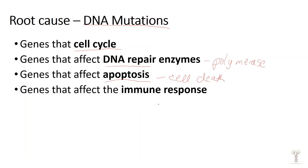And lastly, the immune response. We have immune cells called natural killer cells that will kill cancer cells if they do develop. We have all of these safety mechanisms: we regulate the cell cycle, we can fix mutations, we can kill cells that have too many mutations, and if those cells develop into cancer cells, we have immune cells that can get rid of them. If the immune response is not regulated, cancer cells can grow unchecked.